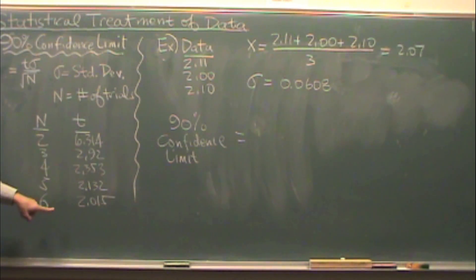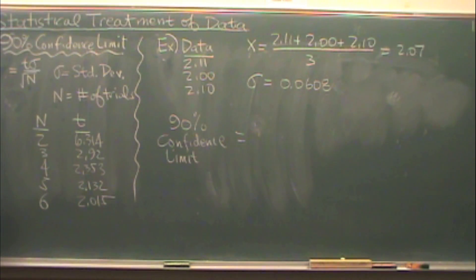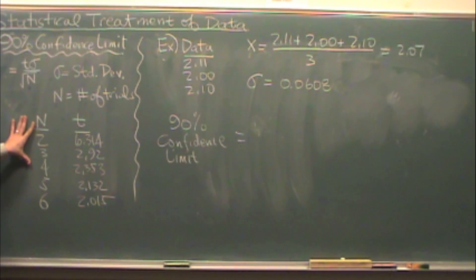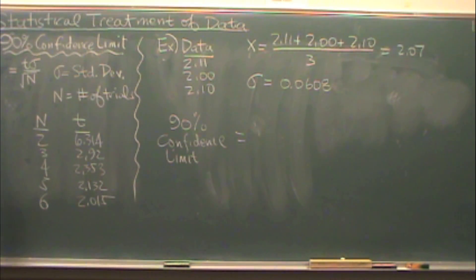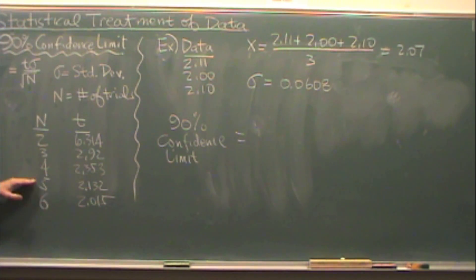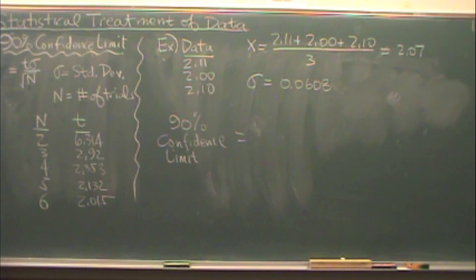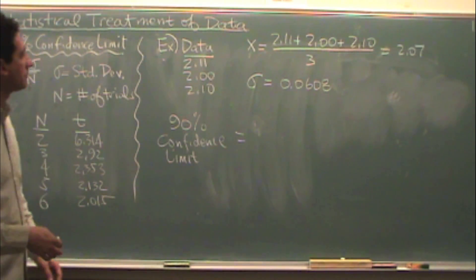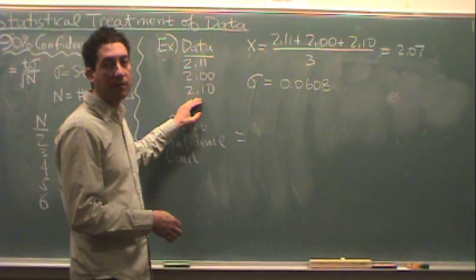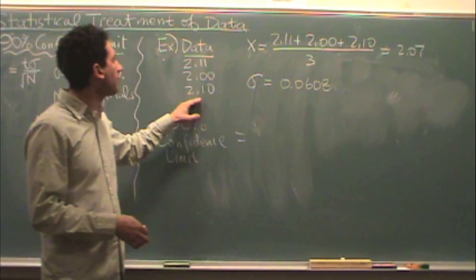t is actually from this table. So if you don't have this table — for some reason you don't have the lab manual or you don't have access to it — make sure you write it down. You're going to need to know the value of t based on the number of trials. Let's take a look at our example.